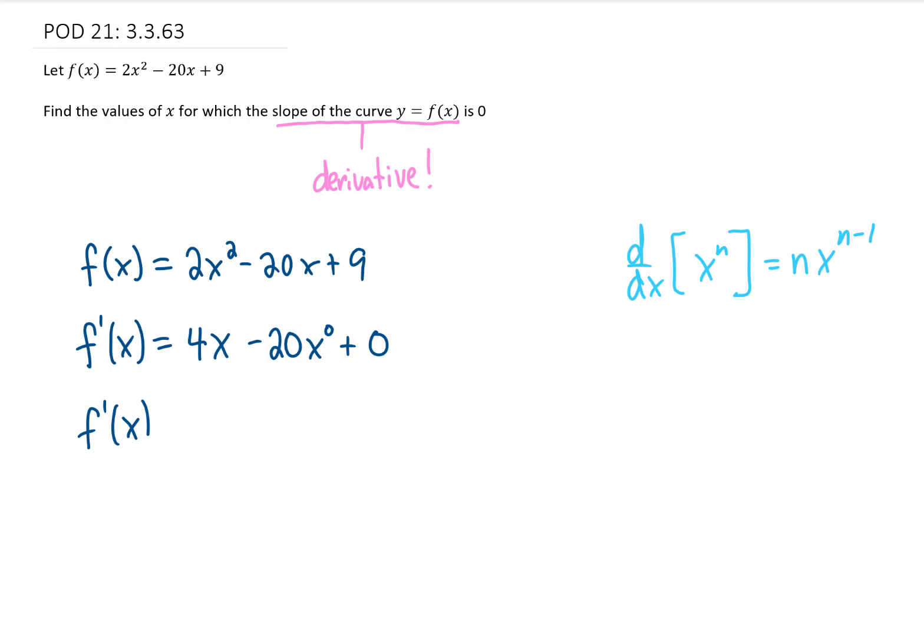Now we can clean this up. Our first term is 4x. Our second term, because x to the 0 is simply 1, the value of our derivative is just 4x minus 20.